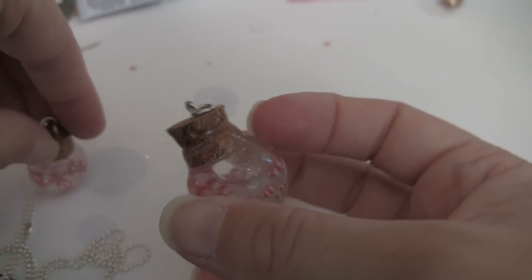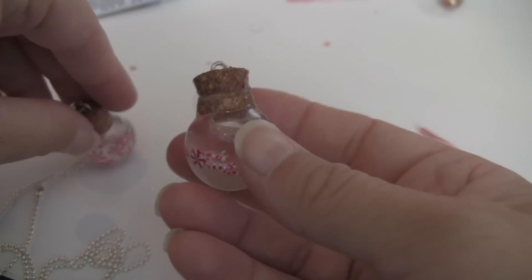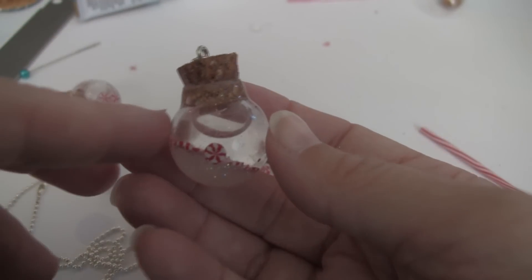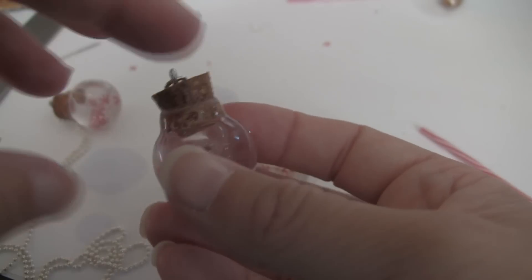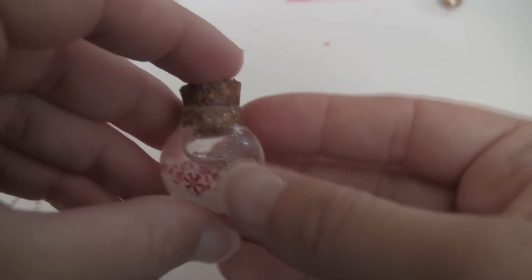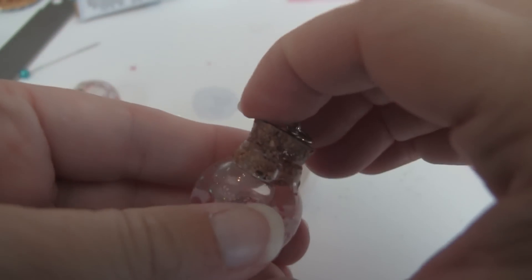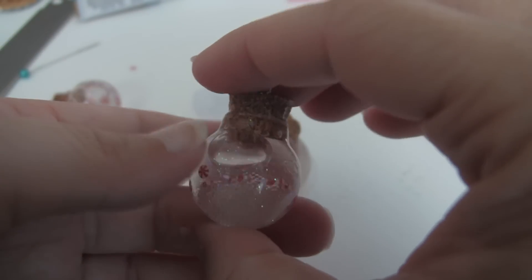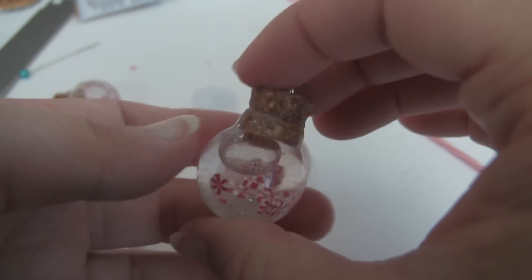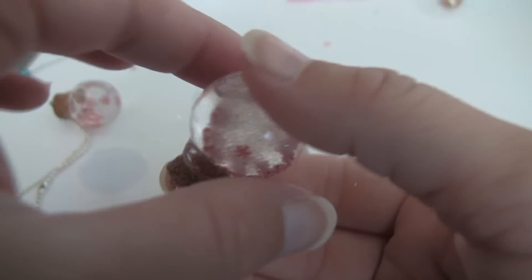You can decorate with silver or a different color to go ahead and make sure that if you want it to look more like a Christmas bulb, you could add ribbon. You can hot glue some ribbon, tie a little bow on there, make it look a little bit more festive.